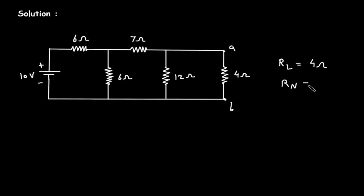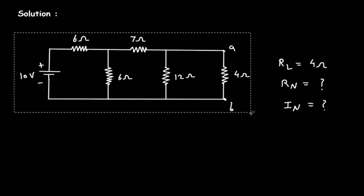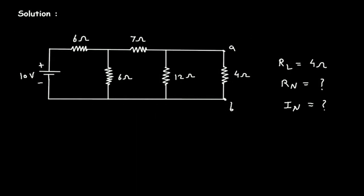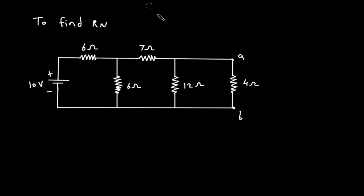Next we have to find Rn, that is Norton's resistance, and In, that is Norton's current. First we will find Rn. To find Rn, we have to remove this RL and short circuit the voltage source.